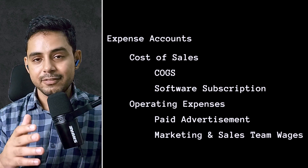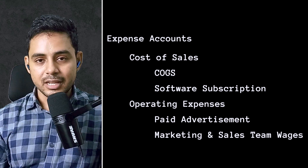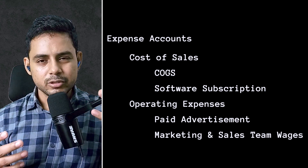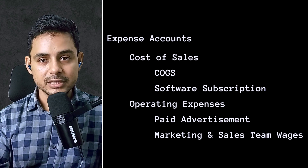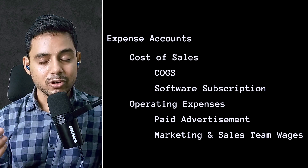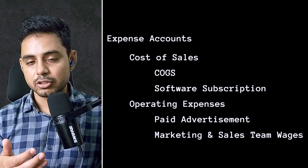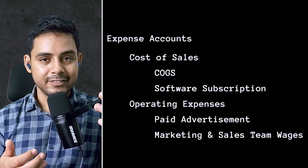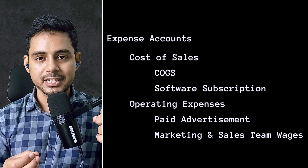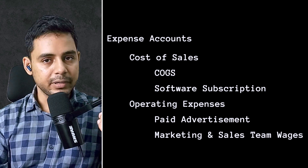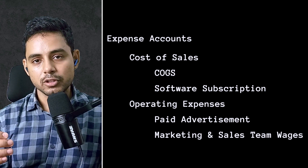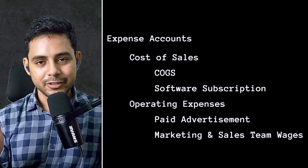Moving on to expenses, you will have two different account types. The first is cost of sales accounts. Cost of sales is the cost incurred in producing, manufacturing, or providing the product or service that your business generates revenue from. This may include a cost of goods sold account for a merchandising or manufacturing business, a software subscription cost, and — for a design agency providing printing services — the cost of paper. When you remove cost of sales from income, you get the gross profit for your business.